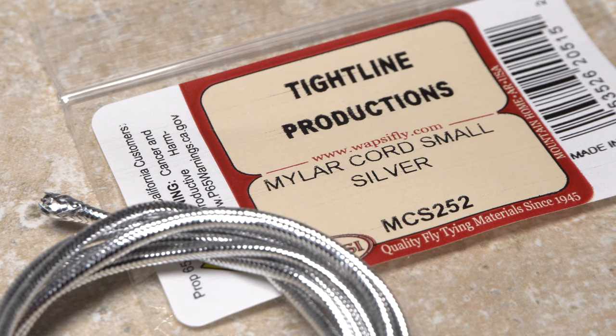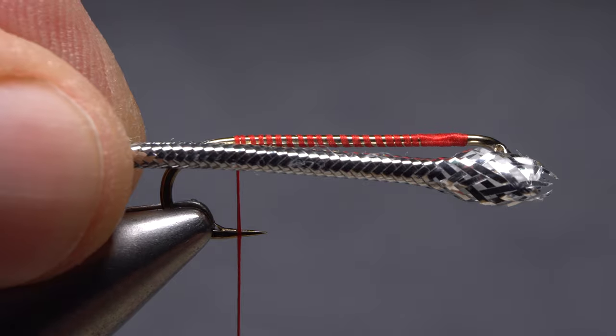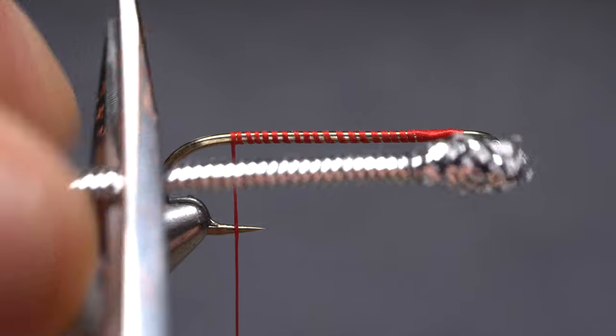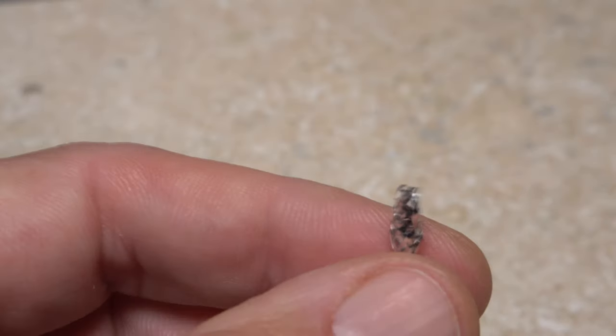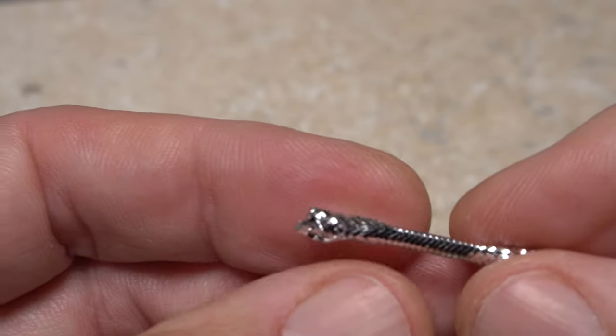Here I'm going to use small silver mylar cord. First, measure and cut off a segment a full hook in length, then with tweezers or forceps extract the string core from the tubing.